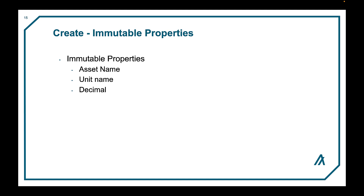If decimal is 0, the asset is not divisible. If 1, the base unit of the asset is in tenths. If 2, the base unit is in hundredths, and so on. A URL specifies where more information about the asset can be retrieved. Default frozen, if true, freezes holdings for this asset by default. The total supply is the total number of base units of the asset to create — this number cannot be changed. The metadata field is intended to be a 32-bit hash of metadata relevant to your asset or asset holders; for example, a hash of a certificate acknowledging the digitized asset is the official representation of a particular real-world asset. The creator address is the address that signs the transaction to create the asset.